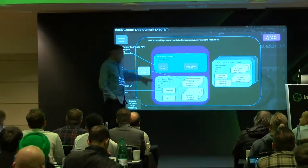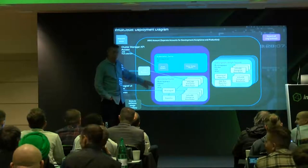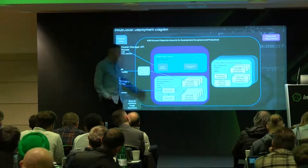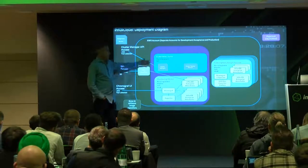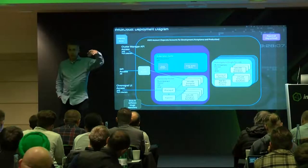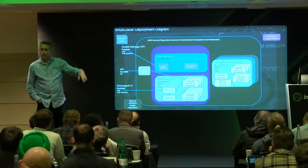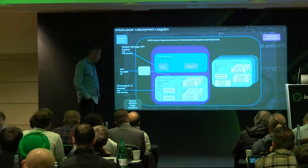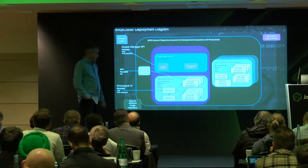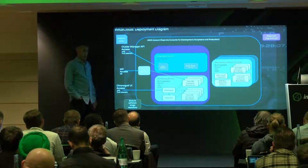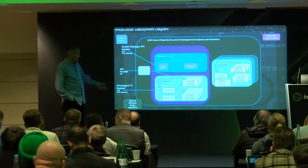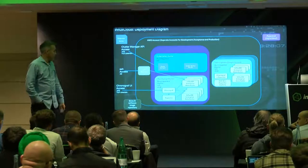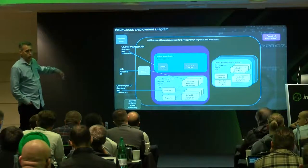We have Chronograf and Kapacitor deployed for alerting, monitoring, dashboards, and we're feeding all of the data into a single monitoring cluster. We're also running Kubernetes — still early days, but we've had good success running the cluster manager and the backup service. We're using Quay as the software image repository. None of these things are built within the AWS environment — we have full control over how those Docker images are built and deployed through our setup.